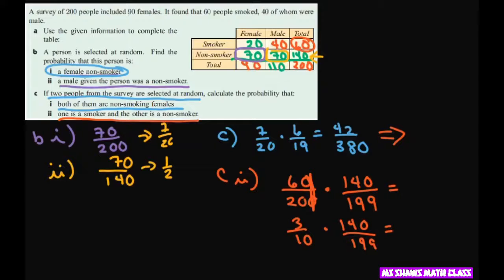Just makes a little easier. Three times 140 is 420. And then for the bottom, you just write 1,990. And that will be your final answer.